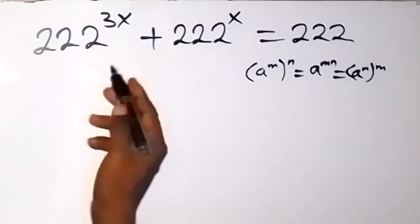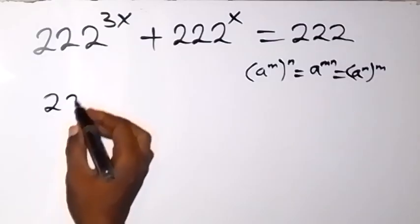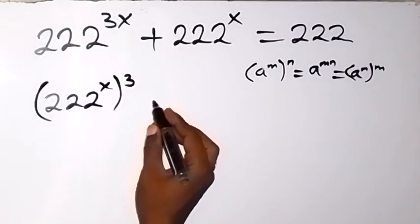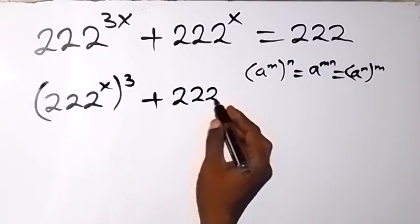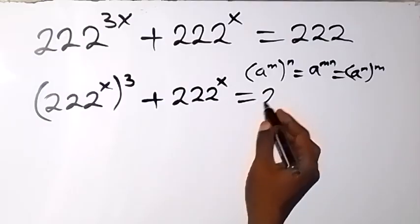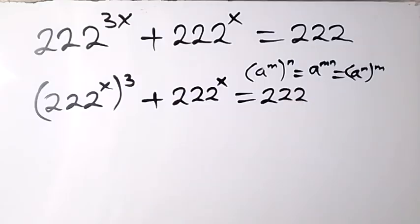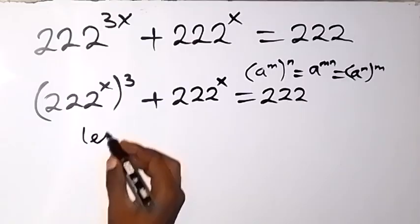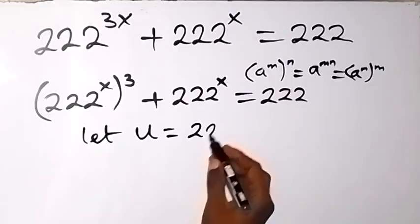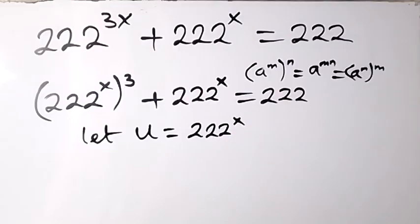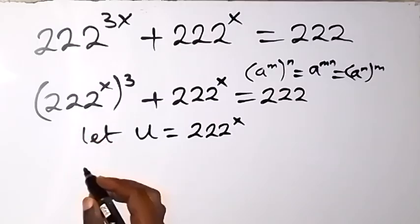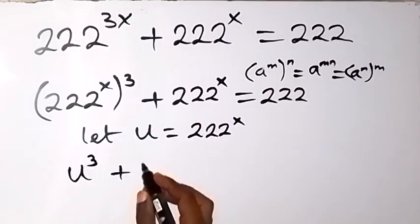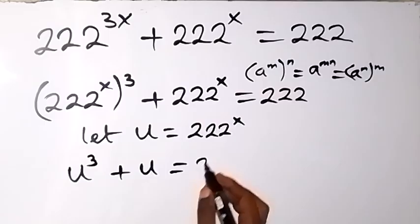So when we write this in that format, we have 222 raised to power x, then raised to power 3, plus 222 raised to power x, which is equal to 222. From here, we can use a letter to represent 222 raised to power x. Let u equal 222 raised to power x. Replacing that, we have u raised to power 3, plus u, equal to 222.